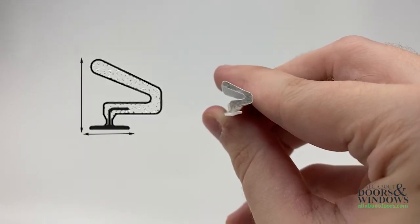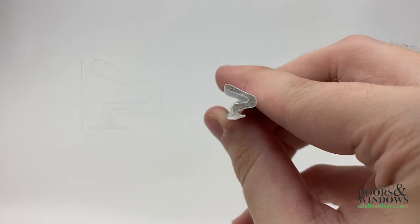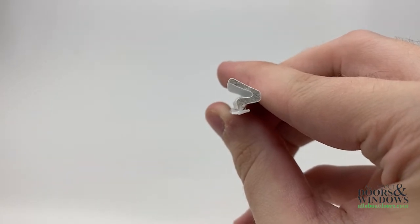This item is a C-fold and demonstrates that weatherstripping can have the same backing but different folds, which is something to consider when looking at a replacement.